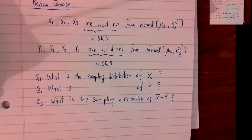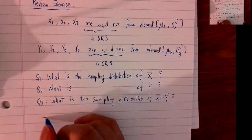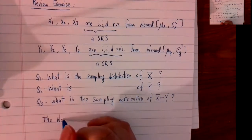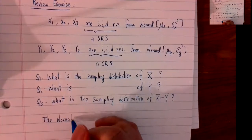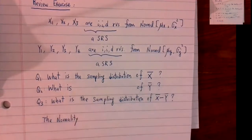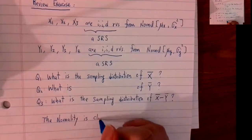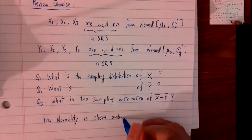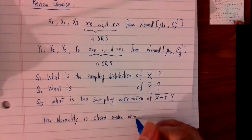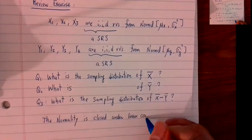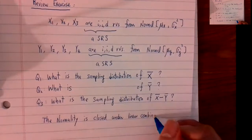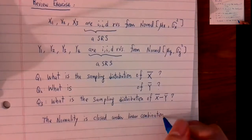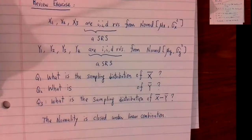For the first one, if you've watched my YouTube video on the t-distribution, you should know this already. We know that normality is closed under linear combination.